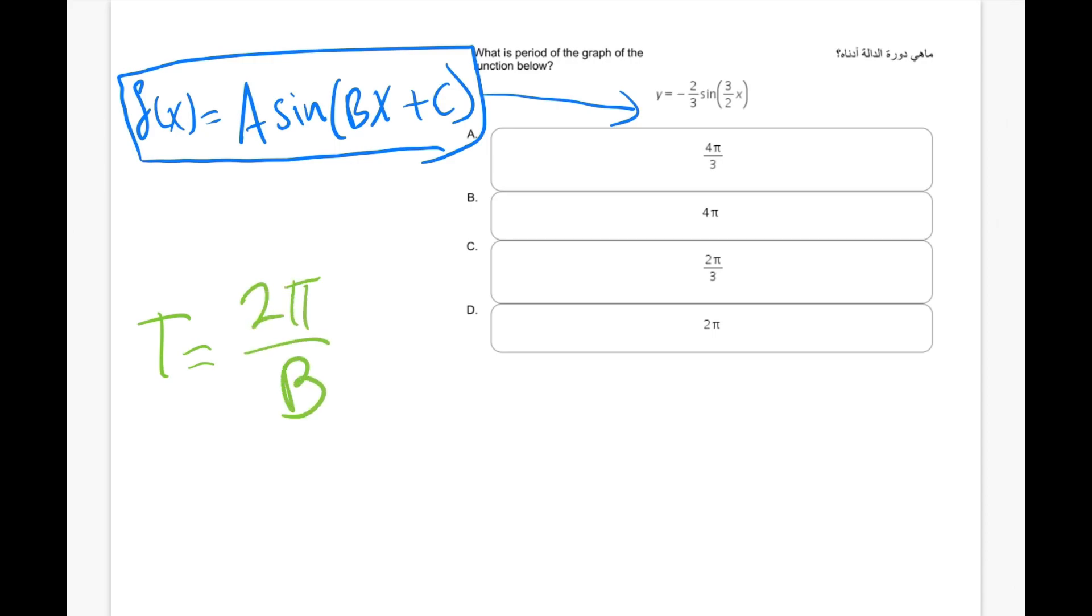So what is b in this case? b is the following part of the function which is 3 over 2. So b equals 3 over 2.